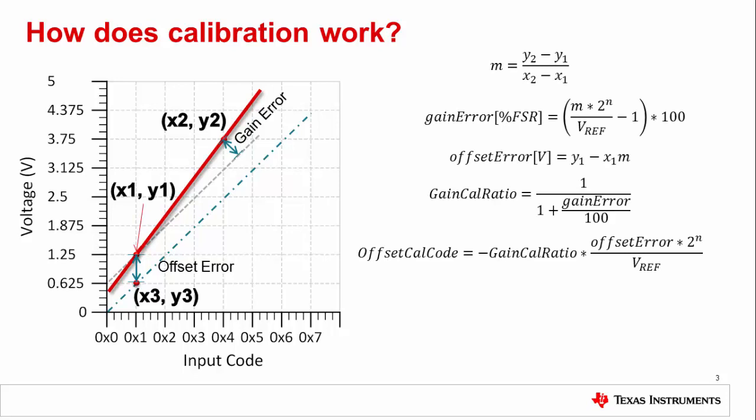The offset calibration code is the difference in the measured and ideal Y values at the low code. The gain calibration ratio is calculated from the slope of the measured line. Finally, you can put these calculations into the new code equation to get the adjusted code value you should use.